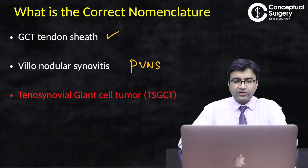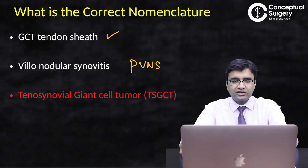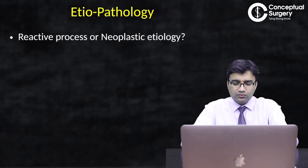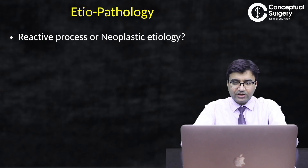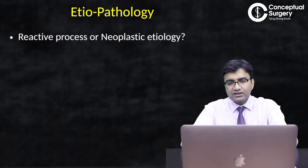Historically, Jeffrey first described this around 1946, where it was considered a reactive pathology — due to some trauma or irritation causing growth. Over time it was realized it is not just a reactive etiology but has a neoplastic nature. It has now been proved that tenosynovial giant cell tumors are not just a reactive process but have a neoplastic etiology.